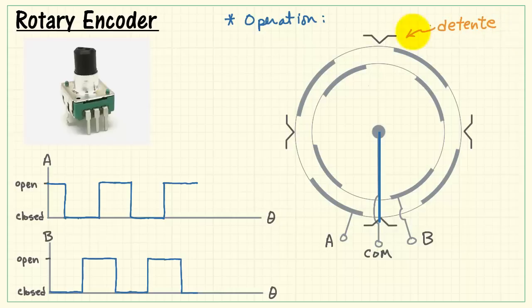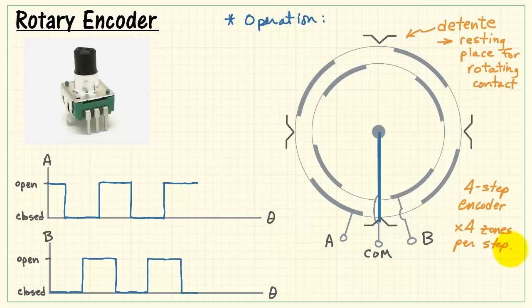Now the rotary encoder has a series of detents around the periphery of the switch, and this gives us a resting place for the rotating contact. You can actually feel these as little stops as you rotate the knob. Now the picture that I'm showing here would be called a four-step encoder.